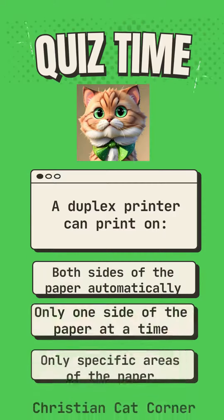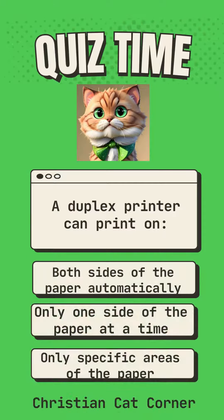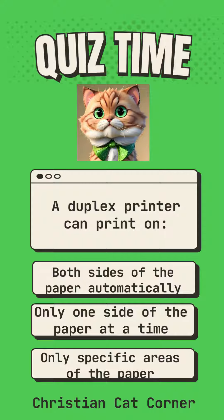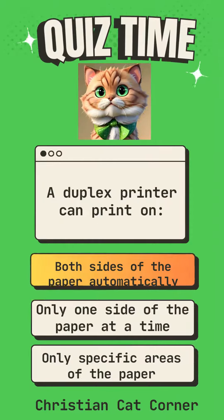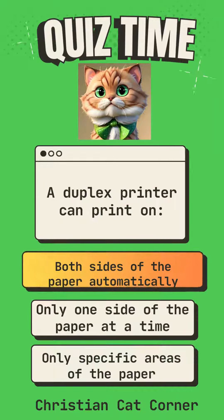A duplex printer can print on: both sides of the paper automatically, only one side of the paper at a time, or only specific areas of the paper? Answer: Both sides of the paper automatically.